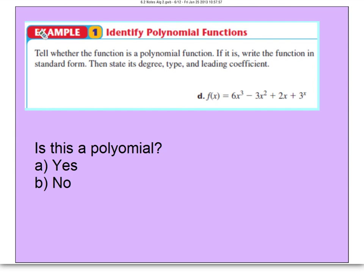This example here wants to know if it's a polynomial. Starting off, it looks really good. We have x cubed, we have x squared, and we have x to the first. However, this guy right here, the exponent must be a number. Here the exponent is a variable. So no, this is not considered a polynomial.